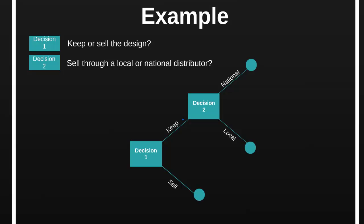Assuming that we have decided to keep the design for ourselves, we're immediately faced with the second decision — whether to go with the national or the local distributor — before we arrive at the final outcome. This is now our final decision tree. It helps us to visualize the decisions we face and the options available to us. However, to make it more useful, we need to flesh it out by adding outcomes and associated probabilities. So we ask our sales and marketing team to provide relevant forecasts relating to the sales of this new toy.